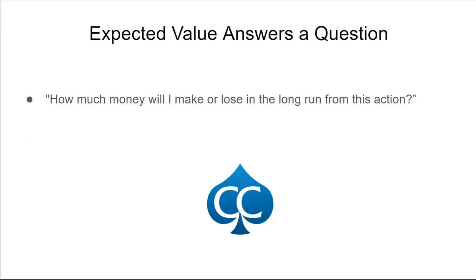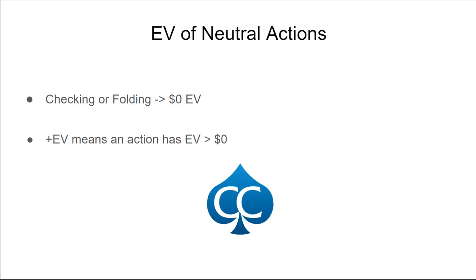The other topic we're talking about today is expected value, which answers the question: how much money will I make or lose in the long run from this action if I took it a million times? So I'm thinking about shoving the flop with a flush draw. I'm either going to win the current pot or I'm going to lose the cost of this bluff. But if I do this a million times, am I going to win 20 bucks or lose 5 bucks? Your expected value is the answer to that question. It's always going to be zero for a neutral action, so we always take checking or folding to be our neutral EV point.